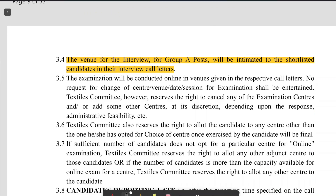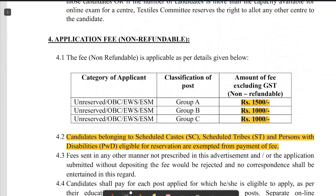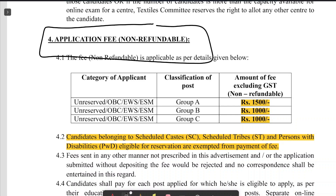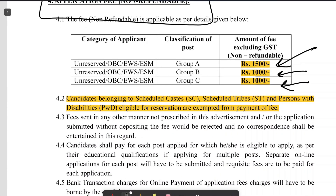After completion of your computer-based test, Group A posts are subjected to an interview and the venue will be intimated later. One very important thing is the application fees, which are very high. For Group A posts, the fee is Rs. 1500 plus GST. For Group B and Group C posts, it is Rs. 1000 each. These fees apply to unreserved, OBC, EWS, and ex-serviceman candidates. Scheduled Caste, Scheduled Tribe, and persons with disabilities are exempted from the application fee.